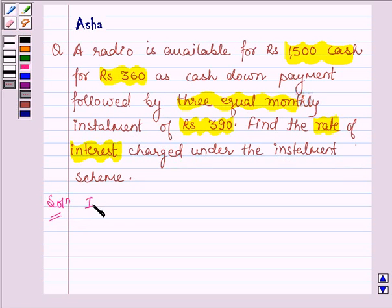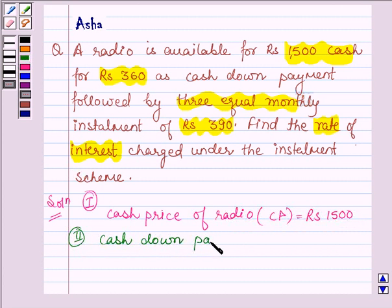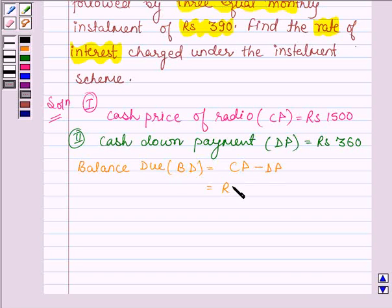Let's start with the solution. First, we are given that the cash price of the radio, denoting it by CP, is equal to Rs. 1500. Second, cash down payment, denoting it by DP, is equal to Rs. 360. Therefore, the balance amount, denoting it by PT, is equal to CP minus DP, which is equal to Rs. 1500 minus 360, and this is equal to Rs. 1140.